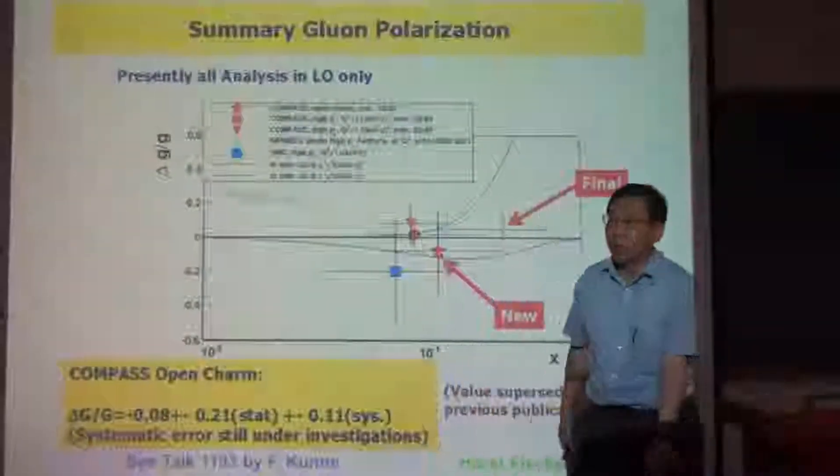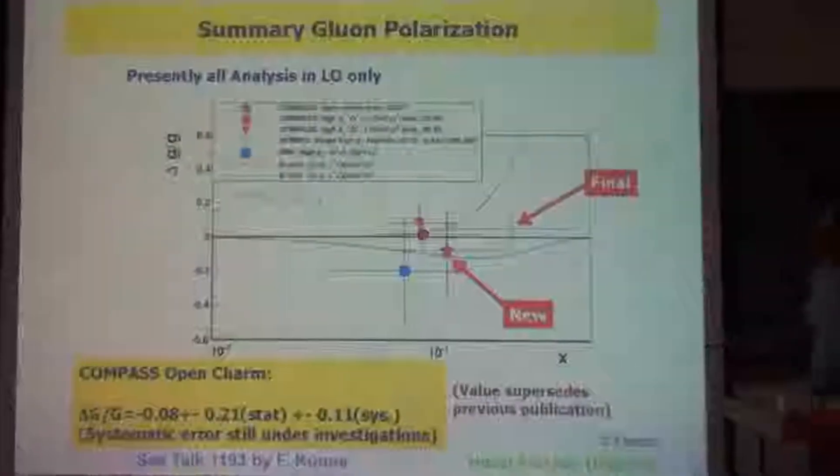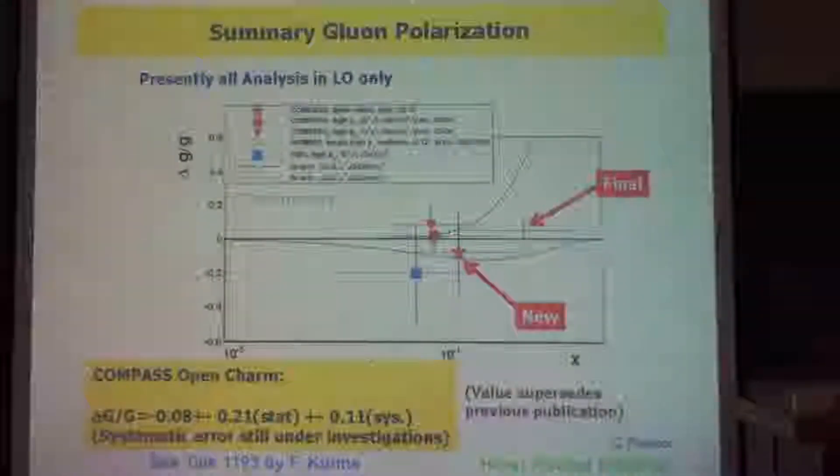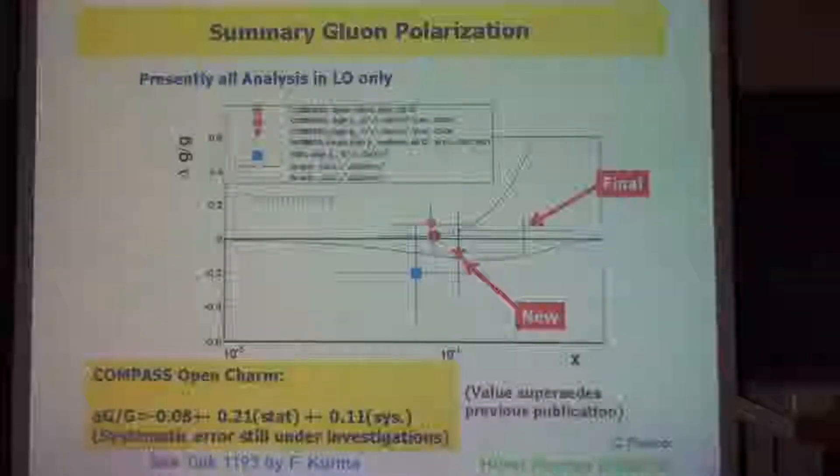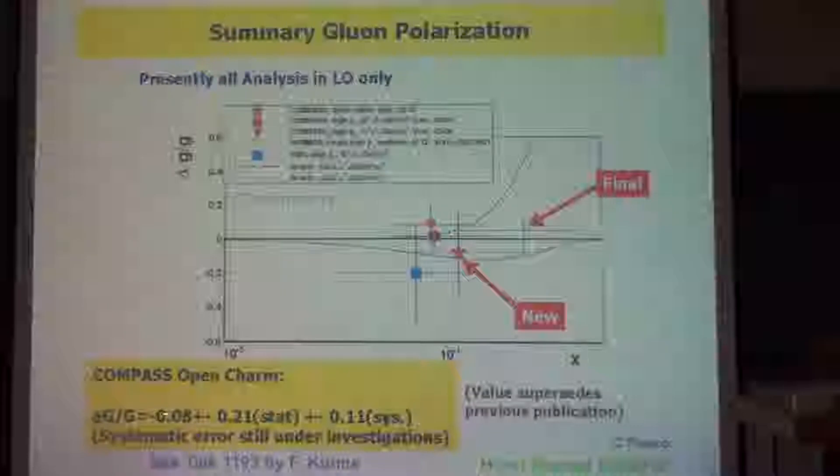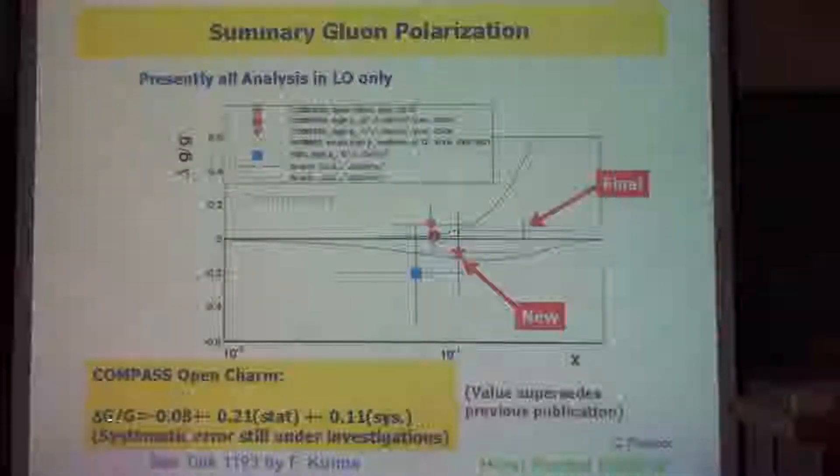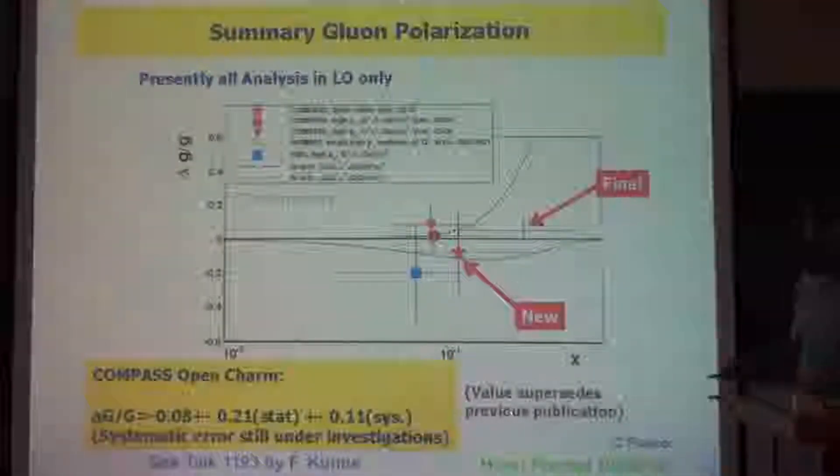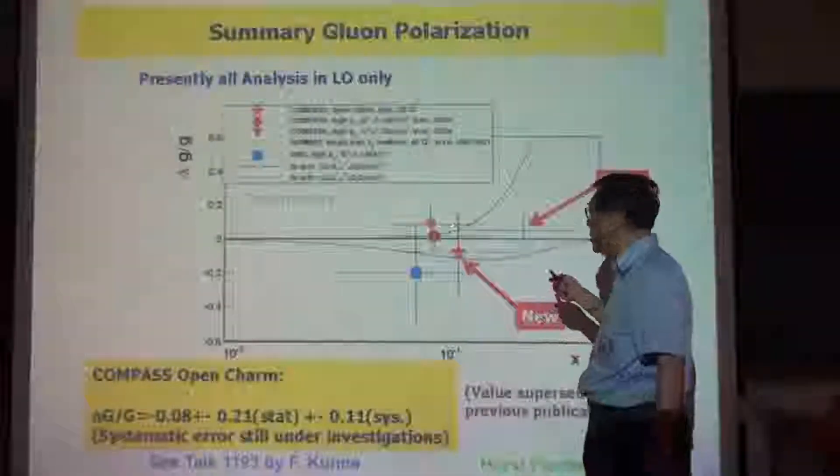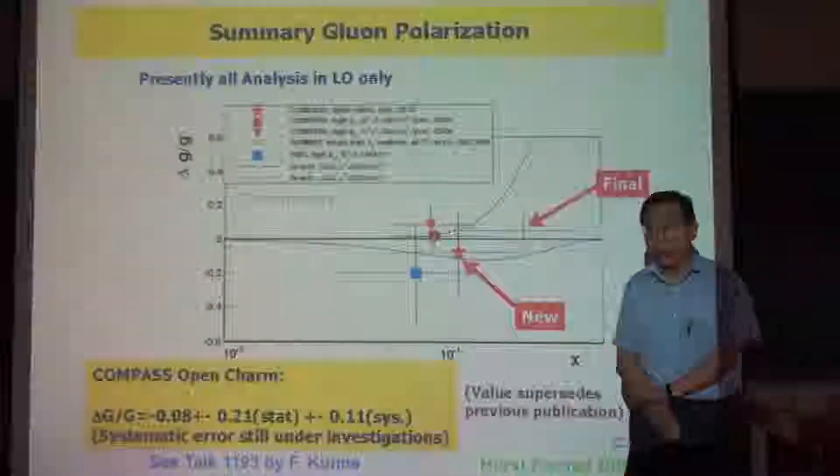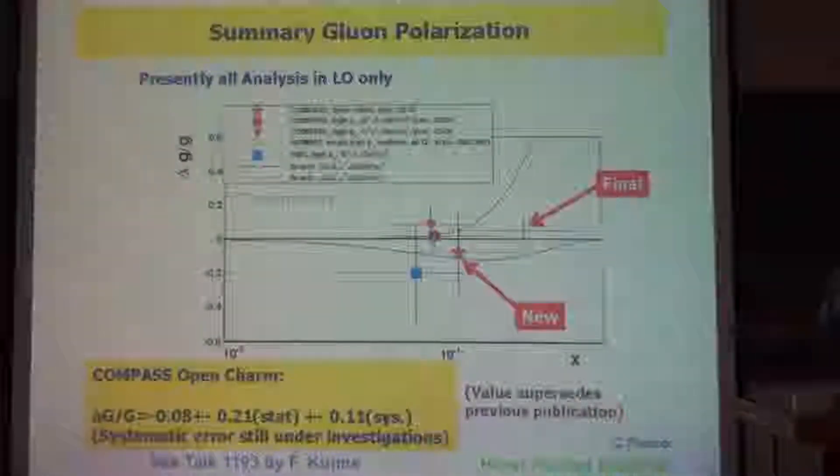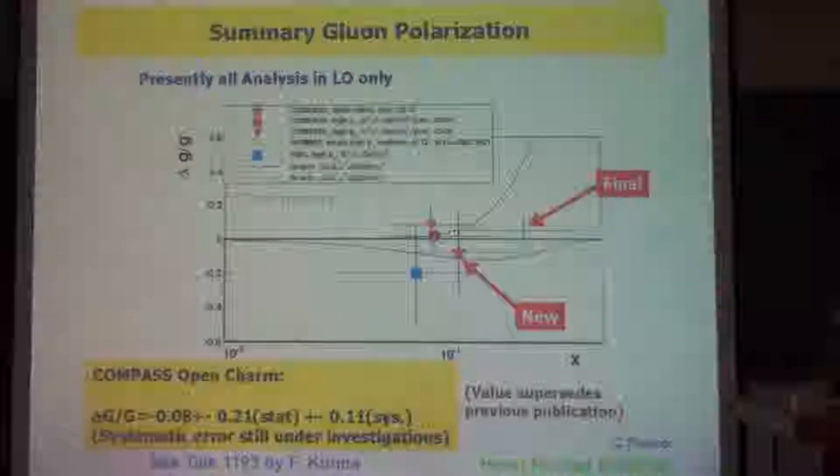So people looked at this in the COMPASS and CERN and STAR collaborations at Brookhaven, and they found this delta G over G. This is the gluon helicity distribution over unpolarized, turned out to be rather small, close to zero. And the most recent results show that perhaps there's a 0.1, 0.2 contribution, 10 to 20 percent of it from gluon spin.